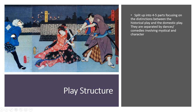Similar to Koteba — the art form from Africa with two very distinct play structures — kabuki also has a very specific structure in how their plays are organized. Usually they're split up into four to five parts, focusing on the distinction between the historical play, which always comes first, and the domestic play, which focuses on family life, marriage, and love. These sections are separated by dances and comedies, including mystical characters.